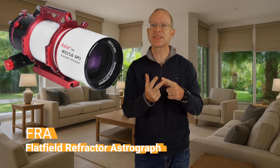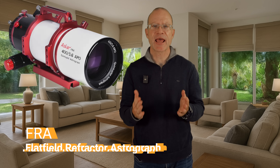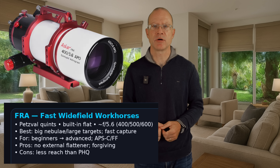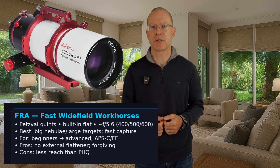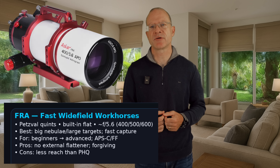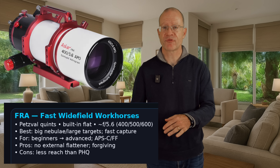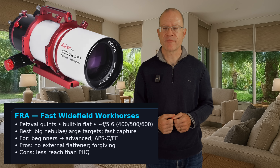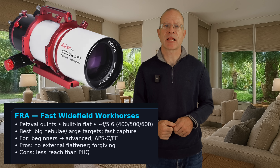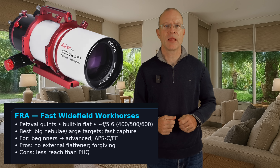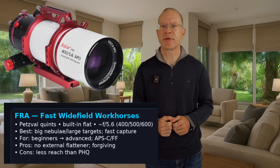Let's go to the FRA series, which is about as old as the PHQ line. FRA stands for Flatfield Refractor Astrograph. The FRA series are quintuplets in a Petzval design, so back focus is no issue at all — one of its key advantages. It's much faster than the PHQ series, all at f/5.6, with a nice image circle so full frame is feasible. They're only available up to 600 mm focal length though, so if you need something longer you have to go with another series.